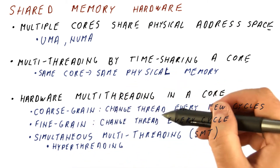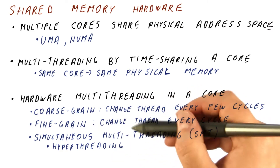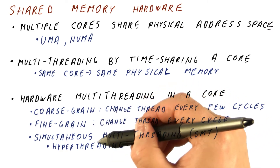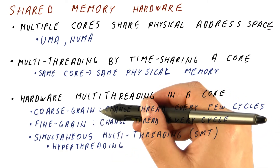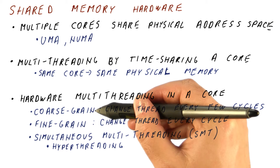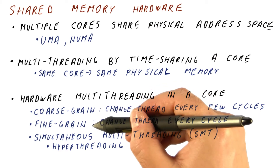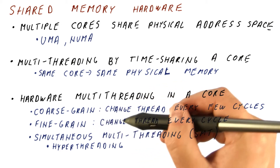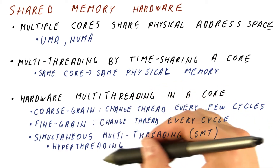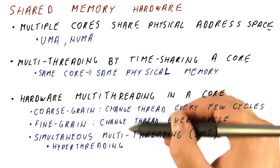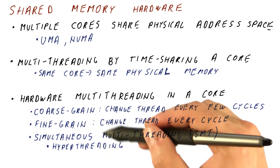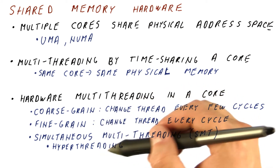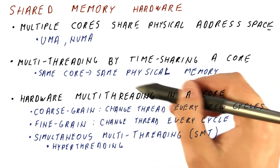Hardware support is needed for any one of these three approaches, and it becomes more extensive as we move from coarse-grain to fine-grain to simultaneous multi-threading. The question then is: what do we benefit by sharing the same core among multiple threads? Don't we get the same thing as in the single-core time-sharing case?